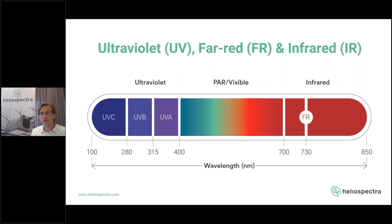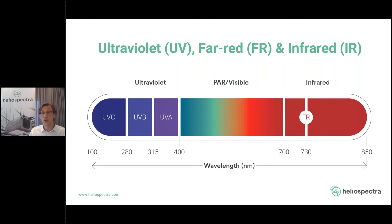On the other side of the spectrum, to the right, we see far red radiation around 730 nanometers. Far red is light with wavelengths between 700 and 750 nanometers. Far red light is also of great importance to plants — first, it acts as a signal, and research has also shown that it contributes to photosynthesis. So far red is very important to plants as well. Going further right into 800, 900, or 1000 nanometers and beyond, that would be infrared light, which does not have direct effects on plants.